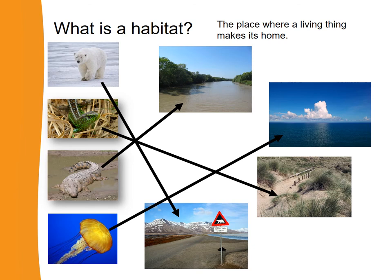How did you do? OK, let's start by running through some of the answers. First of all, let's look at the picture of the polar bear. You can see that the polar bear is covered by thick fur, and we know it lives in cold places. So I've drawn an arrow from the picture of the polar bear to the picture of the mountains with the snow on them.